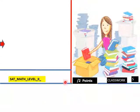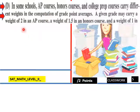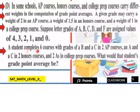So an example of this weighted averaging: in some schools, AP courses, honor courses, and college prep courses carry different weights in the computation of grade point averages. A given grade may carry a weight of 2 in an AP course, a weight of 1.5 in an honors course, and a weight of 1 in a college prep course. Suppose letter grades of A, B, C, D, and F are assigned values 4, 3, 2, 1, and 0. A student completes 6 courses with grades of B and C in 2 AP courses.